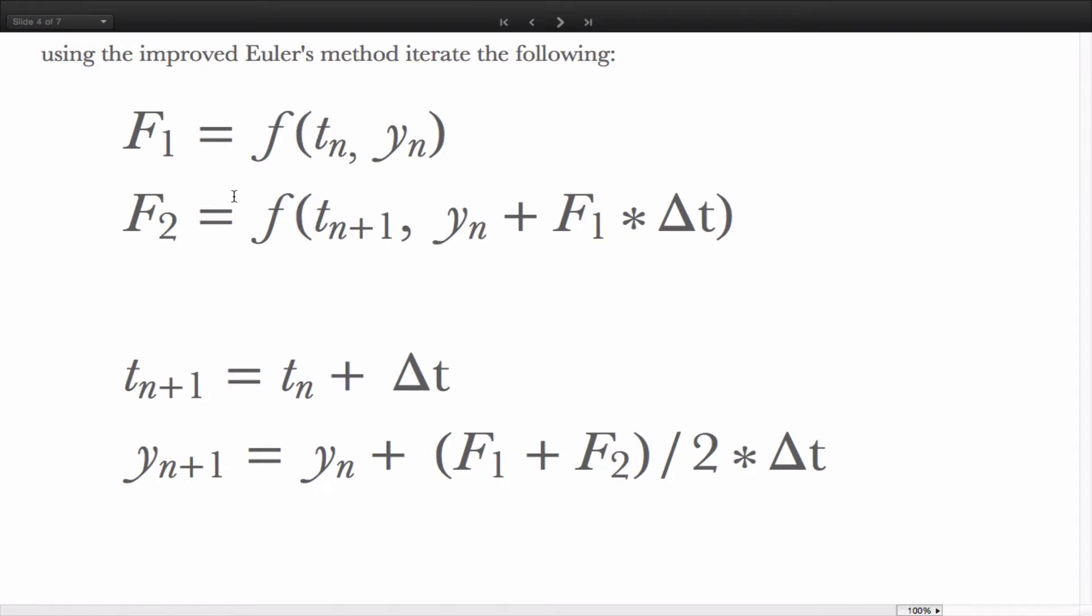And then using that value, we predict the slope at the end of the interval, t sub n plus 1, by computing y as being yn plus delta y. Now, with the slope at the beginning and end of the interval, the improved Euler's method determines the next value as being the previous value plus the average of those two slopes times delta t.